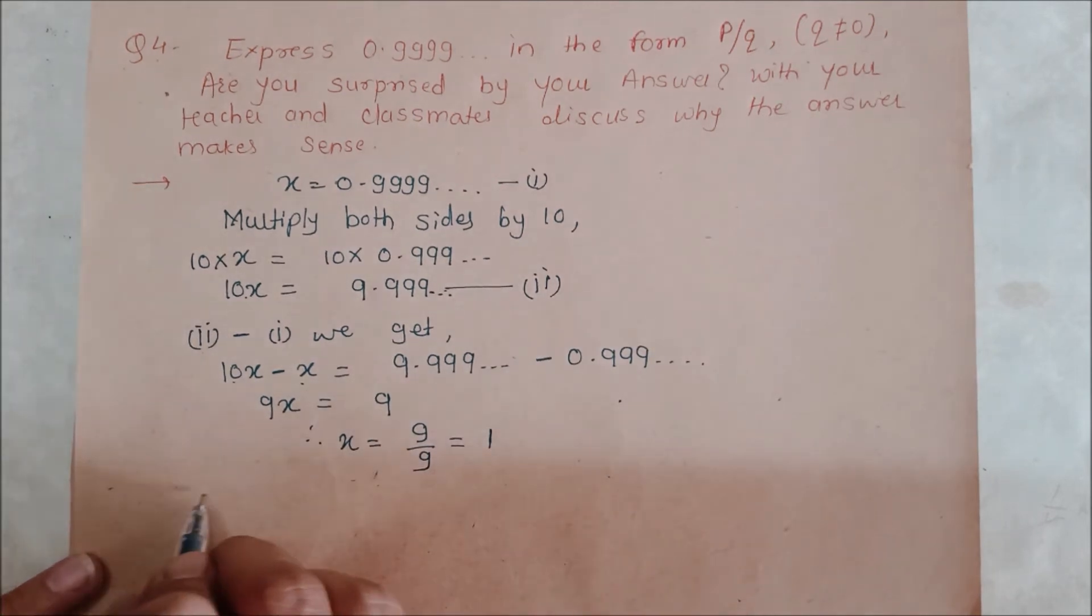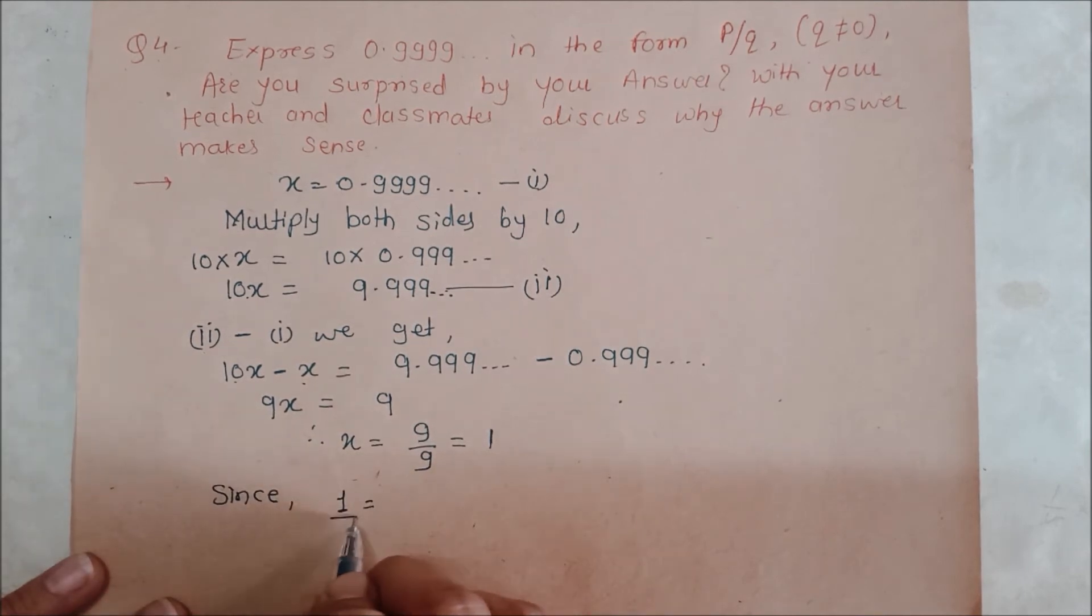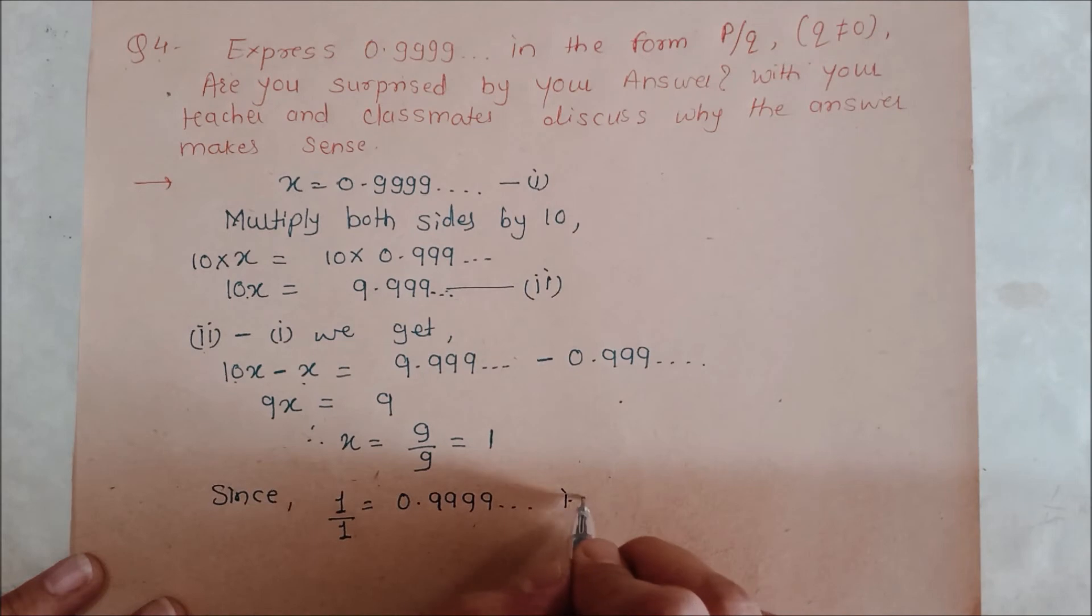Since 1 is equal to 1 upon 1, if you do 0.9999..., the answer will be 1 only. That is 1.